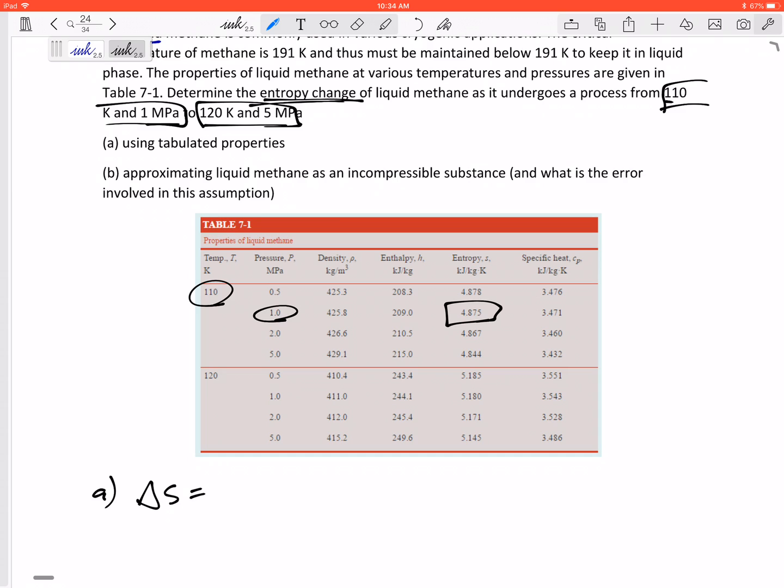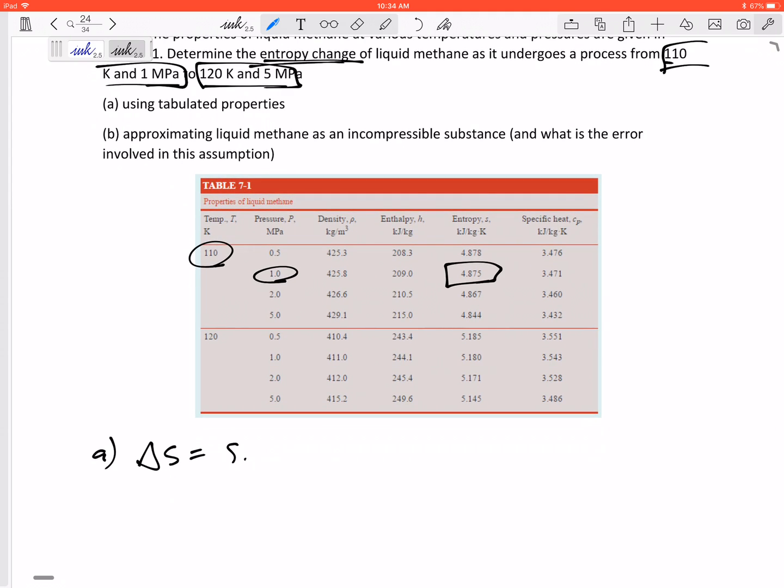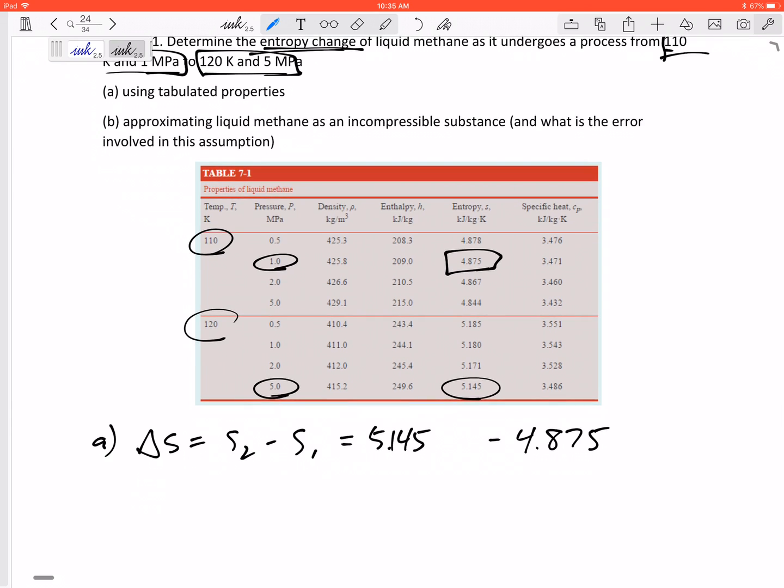Alright, it goes from 110 K and 1 MPa. Alright, so here is our S1. There is our S1. The change in S is S2 minus S1. There's my S1, 4.875 KJ per kg K. My final S2, it's at 120 K at 5 MPa, so down here 5.145. So the change in entropy is 0.270 KJ per kg K. Alright, that's most accurate.